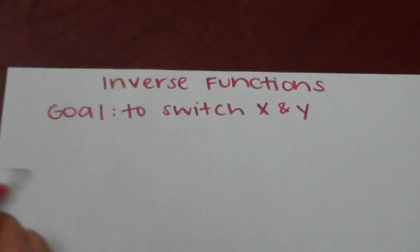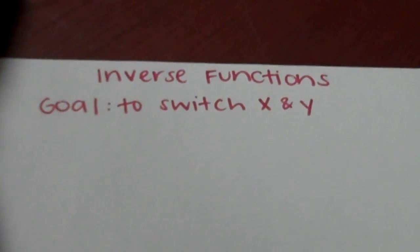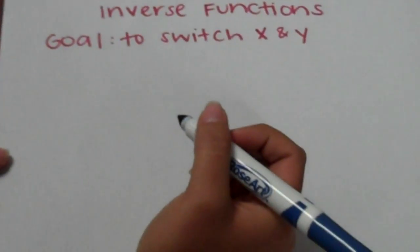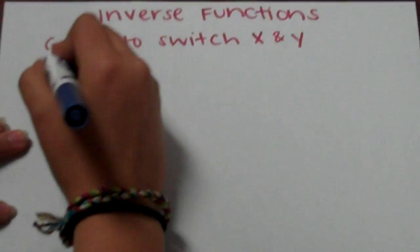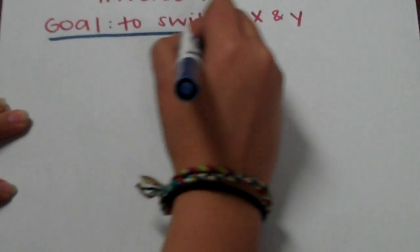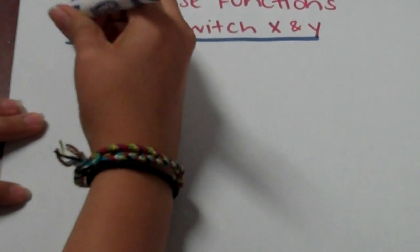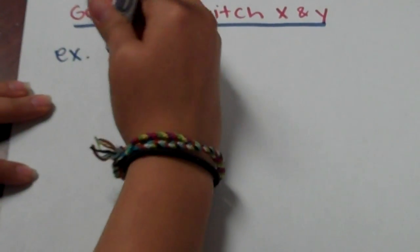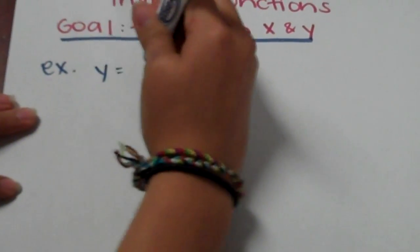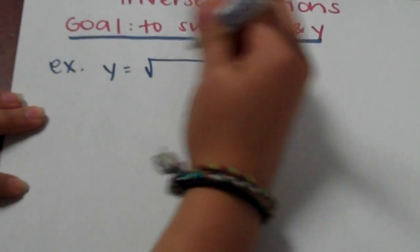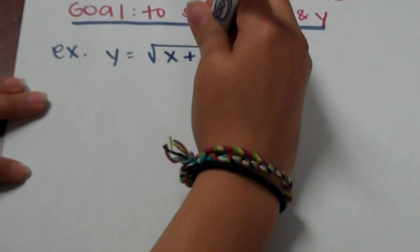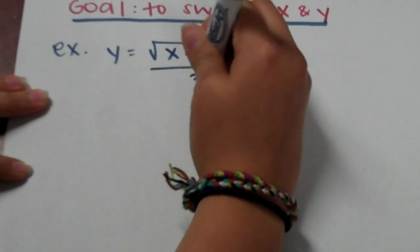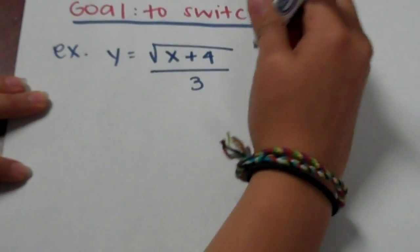Inverse of functions — the goal is to switch x and y. Our example equation is going to be y equals the square root of x plus 4, divided by 3, plus 5.